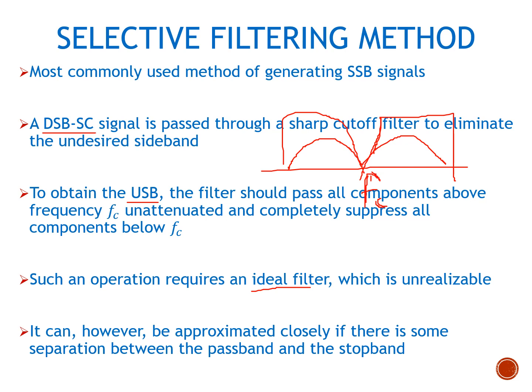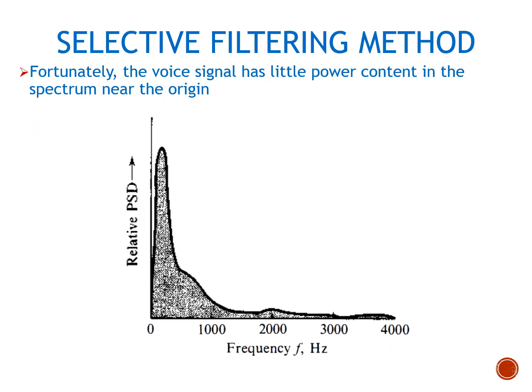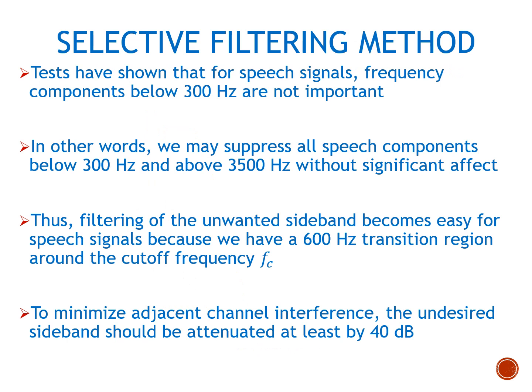Such an operation requires an ideal filter, which is of course unrealizable, but we can get a good approximation in a situation where there is a gap between the pass band and the stop band. If the signal's low frequency components are not very significant, we can achieve good filtering. Fortunately, the voice signal has little spectral content near the origin, so the low frequency content of a voice signal is already quite low.